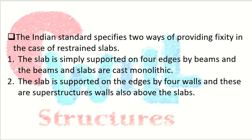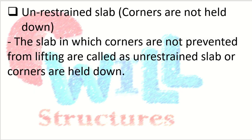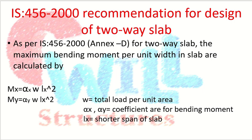In Indian Standard, there are specifically two ways of providing fixity for restrained slabs: one where the slab is simply supported on four edges by beams, and another where beams and slabs are cast monolithically. The slab can also be supported on four edges by walls — the superstructure walls above the slab. In an unrestrained slab, the corners are not prevented from lifting, so corners are not held down.